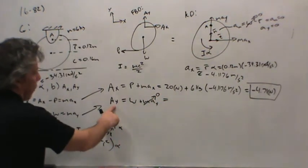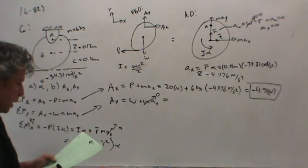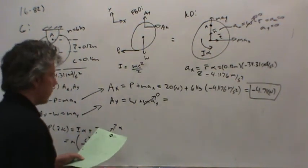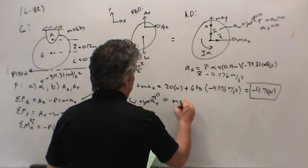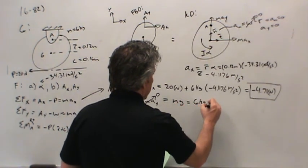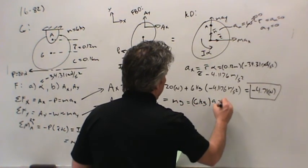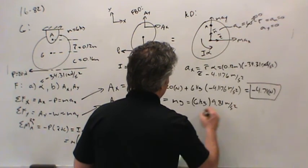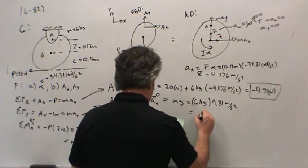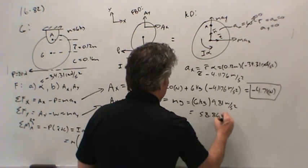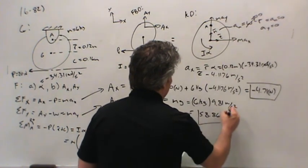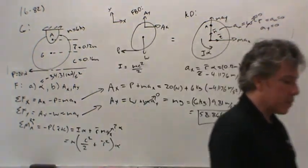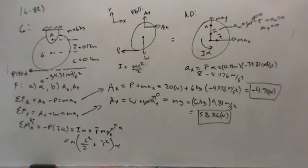Ay, the force in the y direction, is just equal to the weight. The weight is mg, 6 kilograms multiplied by 9.81 meters per second squared. That comes out to 58.86 newtons. So now we have successfully solved for the force in the x and y direction of A, and we have solved for the angular acceleration of the body. Thank you so much.